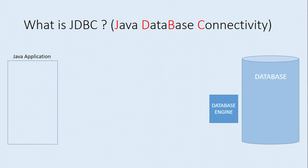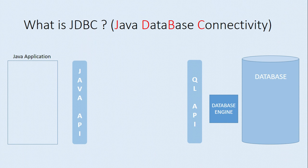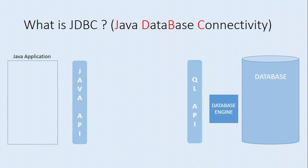Now we also have a Java application, and the task is to communicate from the Java application to the database. We need something in between the Java application and the database. Java has provided APIs — from the Java application side we have Java APIs, and the database also has its own query language APIs. The database logic is written in the Java program in Java representation, while the database only understands query language representation.